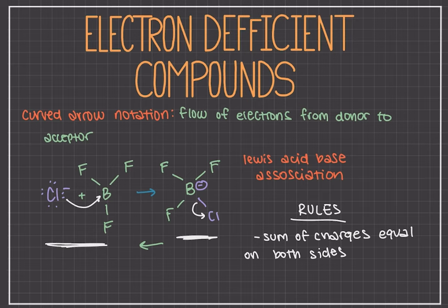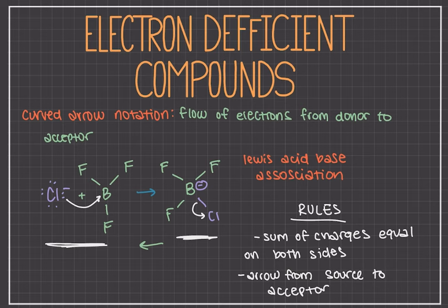Another really crucial thing to remember is that the arrow always goes from the electron source to the electron acceptor. As we have drawn here, from where the bond between the B and the Cl was, the electrons are going towards the chlorine to make the chlorine ion. In our original reactants, the electron pair from the chlorine is the source, and it's going towards the boron, which is the electron acceptor. This is essentially how to use curved arrow notation. These reactions get more and more complicated, but this video introduces you to the idea behind the notation before you dive deep into organic chemistry.